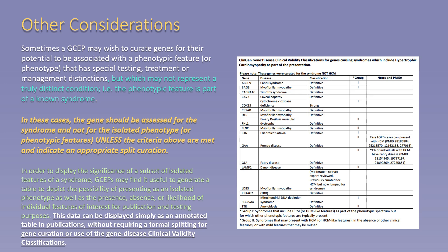Examples may be cardiomyopathy, hearing loss, and aortic dissection. In order to display the significance of a subset of isolated features of a syndrome, gene curation expert panels may find it useful to generate a table to depict the possibility of presenting as an isolated phenotype, as well as the presence, absence, or likelihood of individual features of interest for publication and testing purposes, as shown by the table example on the right. This data can be displayed simply as an annotated table without requiring a formal splitting of gene curation or use of the gene disease clinical validity classifications.